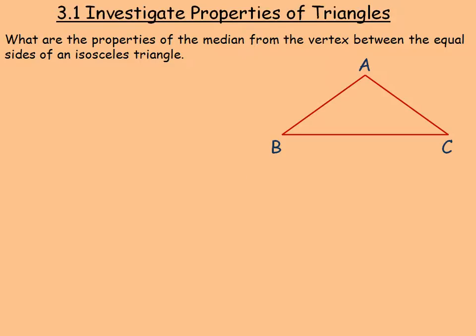In this lesson we'll investigate some properties of triangles. The question asks: what are the properties of the median from the vertex between the equal sides of an isosceles triangle? Here's the vertex at A between the two equal sides. There's our median, and I'll label that point D, so D is the midpoint of BC.